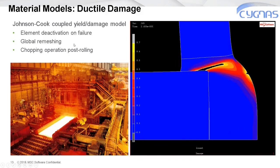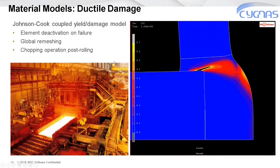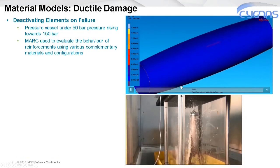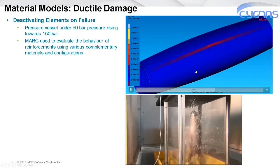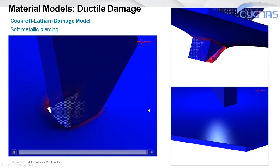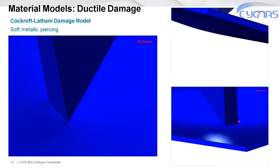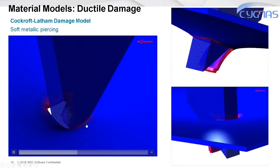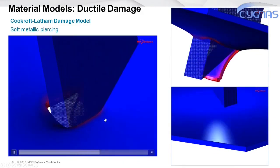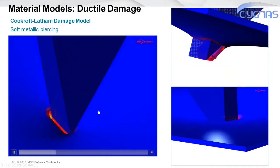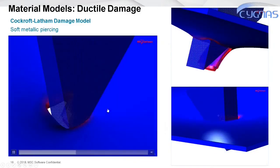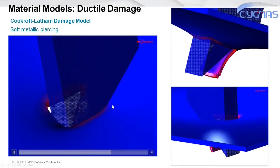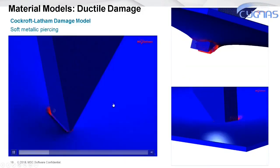In the metal cutting example, the indentation and spring back would typically be expected to require explicit software — but that is not necessary with Marc. For example, impact on a pipeline by an anchor — typical oil and gas — will give an outcome showing the plastically deformed, damaged, potentially heat-affected material properties, or whatever other constitutive modelling considerations are needed for path-dependent follow-up analysis.